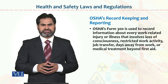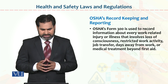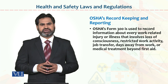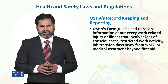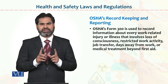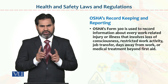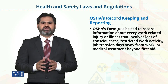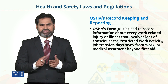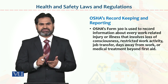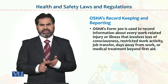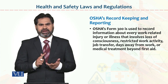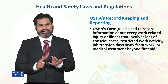OSHA Form 300 is used to record information about every work-related injury. This is very important information for students. Form 300 captures details such as the injury, worker name, when and where it occurred, which department, as well as personal information like age, sex, height, blood group, contact number, and email address.